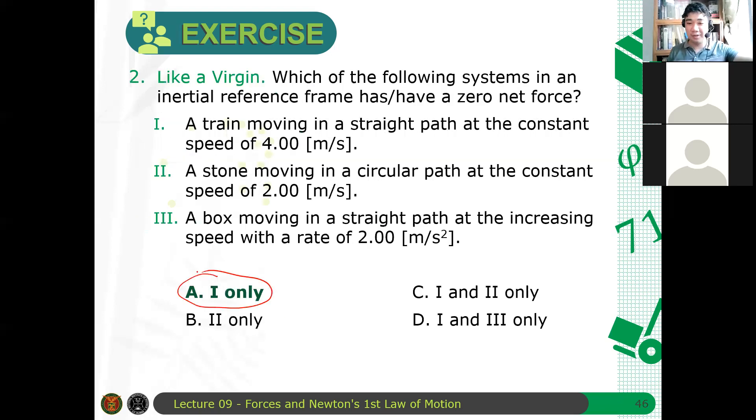Hindi ko pala na-animate ito. Pero sige. Why is it A? Sir siya lang yung zero acceleration. Yes. Again, circular path, it has acceleration. It's changing your direction. Of course, kung nag-change yung speed, kita ng acceleration dito. Therefore, 3 is also not part of an IRF. Not an IRF. Therefore, the answer is A.